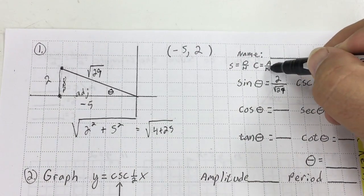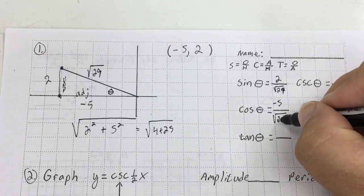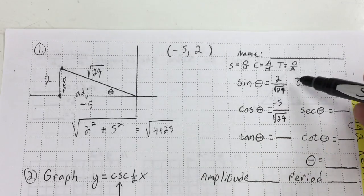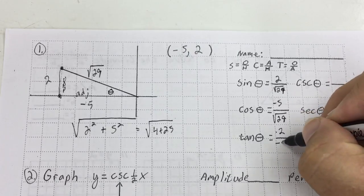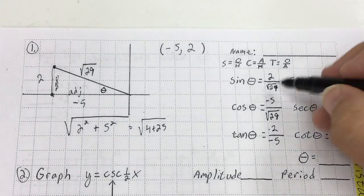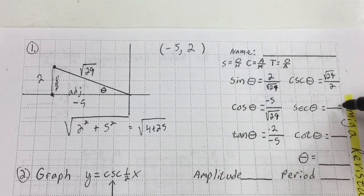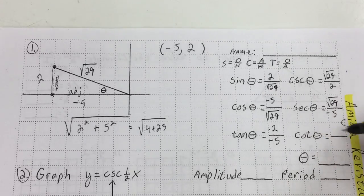The opposite is going to be 2 over root 29. Cosine is going to be adjacent over hypotenuse, so the adjacent is negative 5 over root 29. Tangent is going to be the opposite over adjacent, so that would be 2 over negative 5. The cosecant is going to be the square root of 29 over 2. The secant is going to be the square root of 29 over negative 5 — the negative can stay upstairs. The cotangent is going to be negative 5 over 2.